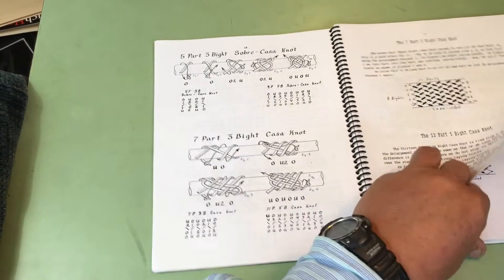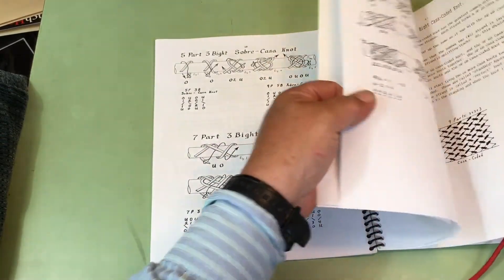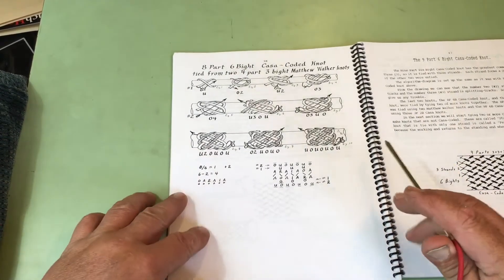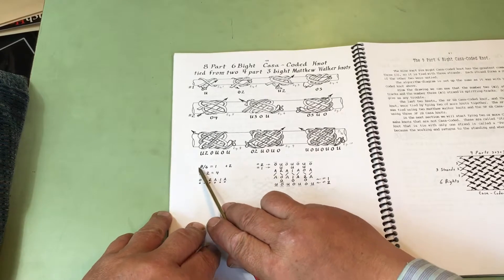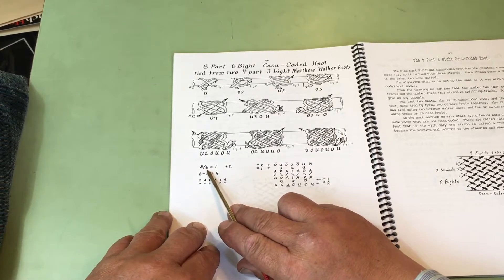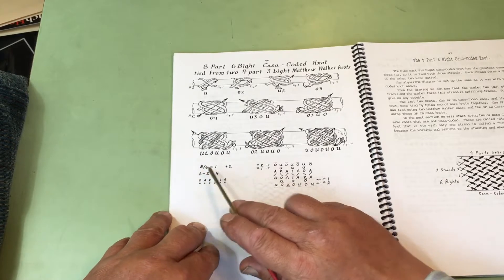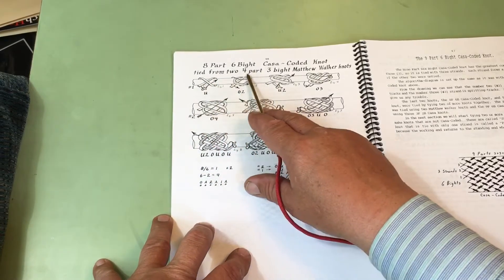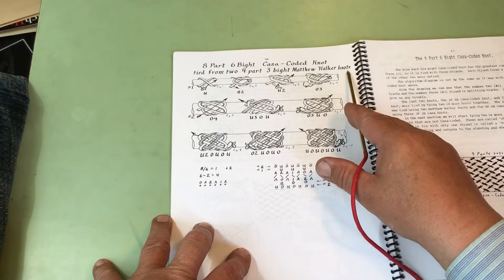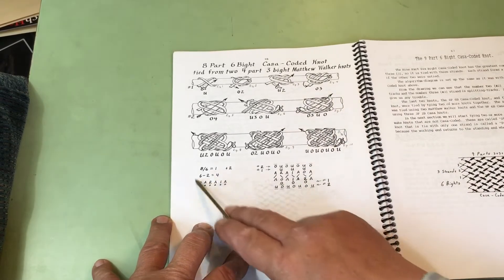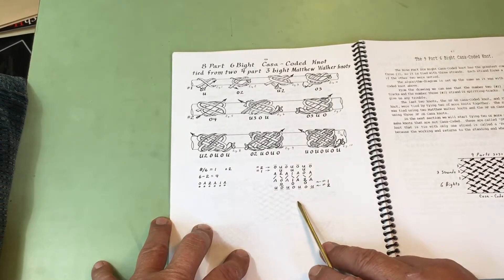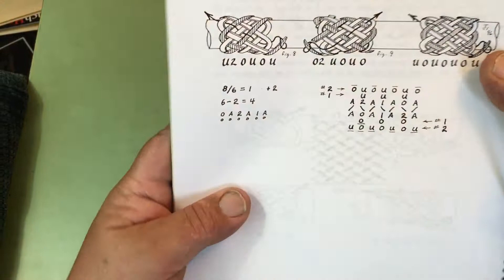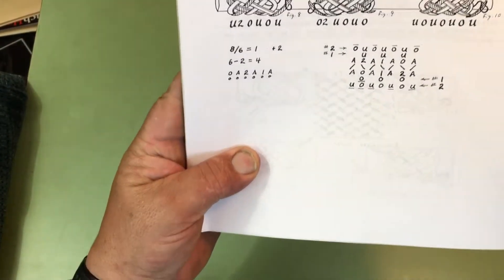And then, in other knots, this knot has a common denominator of two. So, it takes two strands to tie. So, what you're doing is you're actually tying two four-part, three-bight Matthew Walker knots together.